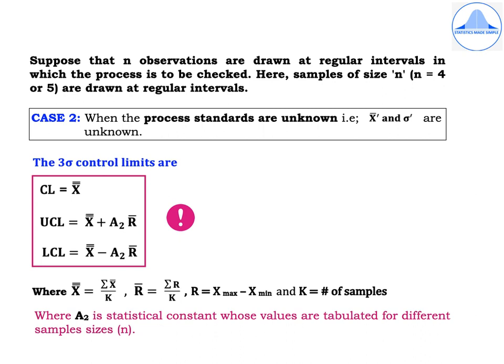Suppose n observations are drawn at regular intervals to check the process. Samples of size n, usually n = 4 or 5, are drawn at regular intervals. For Case 2, when process standards are unknown (x-bar-dash and sigma-dash are unknown), the three-sigma control limits are: CL = x-double-bar, UCL = x-double-bar + A₂·R-bar, LCL = x-double-bar − A₂·R-bar, where x-double-bar = ΣX-bar / k, R-bar = ΣR / k, R = x-max − x-min, k is the number of samples, and A₂ is a statistical constant tabulated for different sample sizes n.